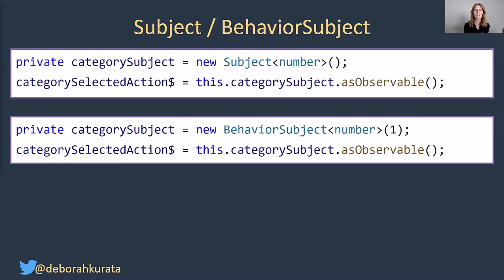So what's the difference between a subject and a behavior subject? With a subject, when you first subscribe, you don't get any initial value — you won't get a value until another value is emitted into the stream. For a behavior subject, if a value has already been emitted into the stream, you will get the last one. If no value has yet been emitted, you get the default value, which is what you specify in the constructor of the behavior subject.